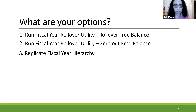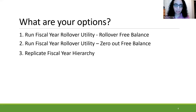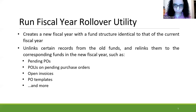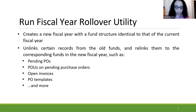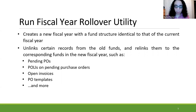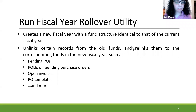There are three options to choose from during your fiscal year: run the fiscal year rollover utility that rolls over the free balance, zero out the free balance — which most libraries choose — or replicate the fiscal year hierarchy without rolling over any encumbrances. Running the rollover utility creates a new fiscal year and fund structure identical to the previous one. If encumbrances are rolled over, the process unlinks records from the old funds and relinks them to the new fiscal year, including pending purchase orders, purchase order line items, open invoices, and purchase order templates.